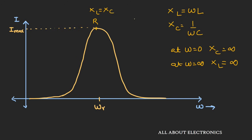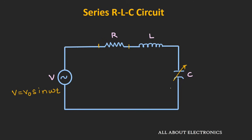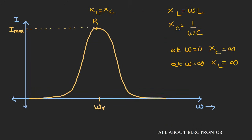This RLC circuit basically provides some kind of selectivity for a given particular frequency, and this principle is used in radio communication for selecting a particular channel. For example, in an FM receiver, when you want to tune to a particular channel, you change the knob in the receiver — what you are actually doing is changing the capacitor value in the circuit. If we change the value of this capacitor, then this curve will get shifted to another frequency, say ωR2. In this way we are able to change the channel or frequency of the given receiver.